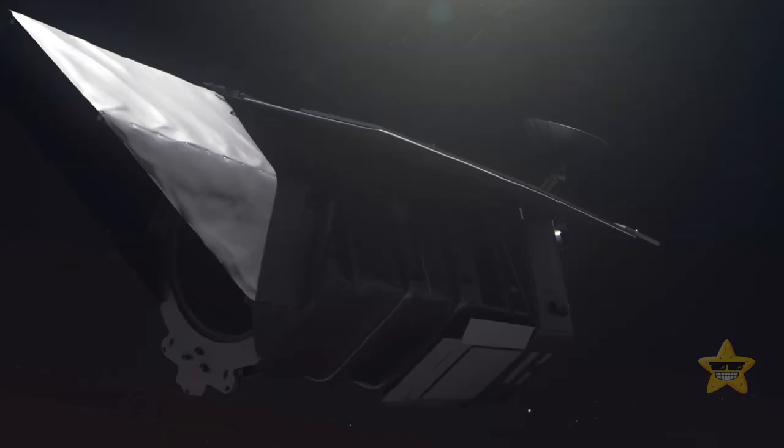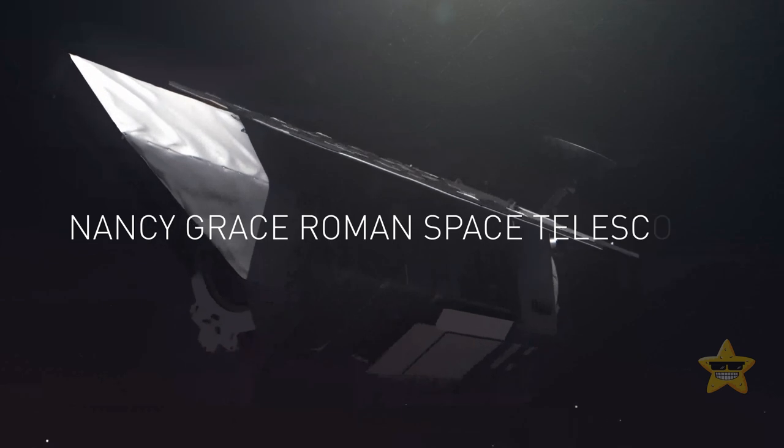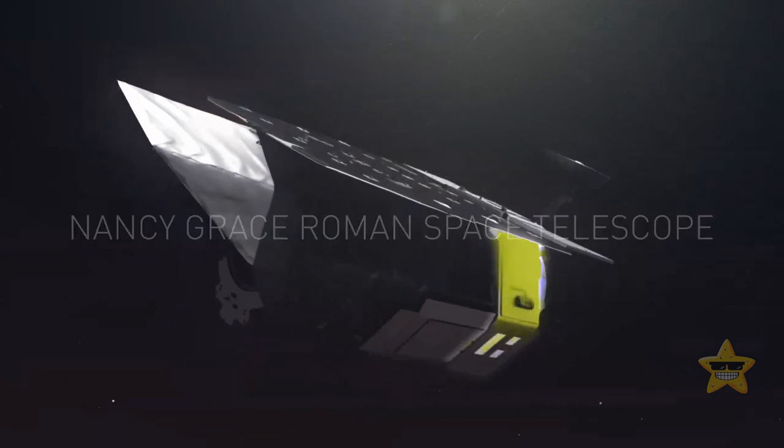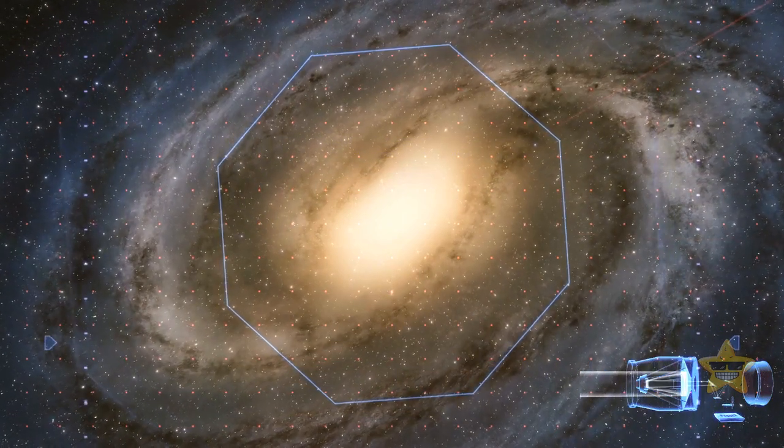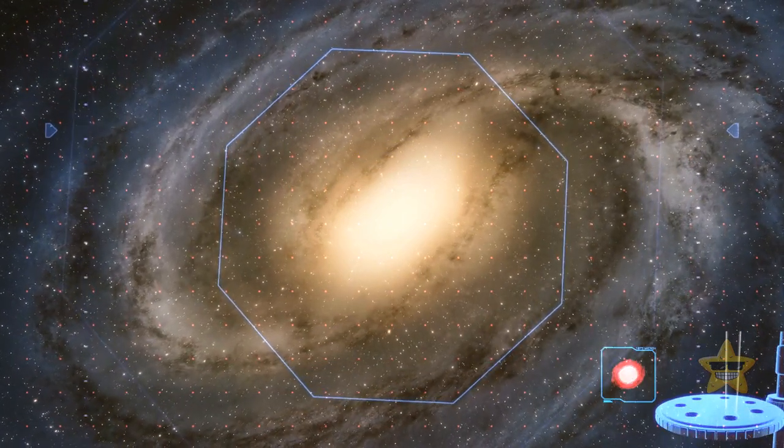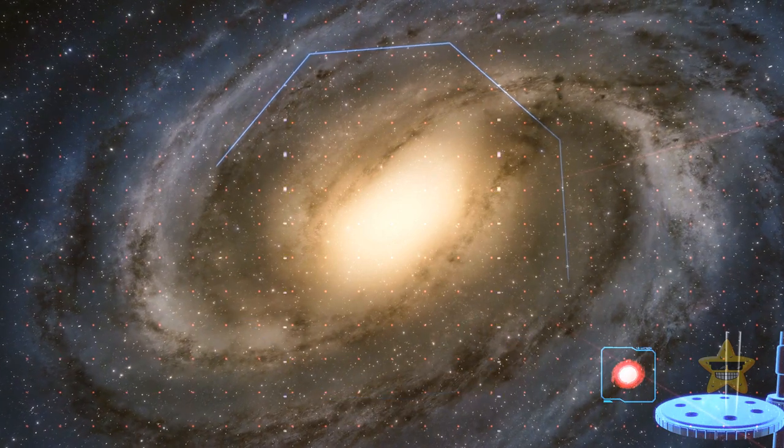NASA has a cool new thing called the Nancy Grace Roman Space Telescope. It can capture really big areas of space relatively quickly. This will help us see how the universe has been transforming since its early days.